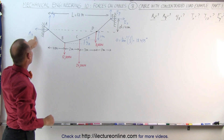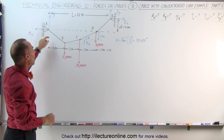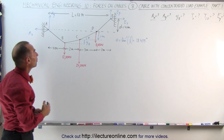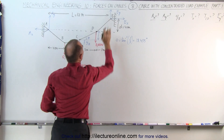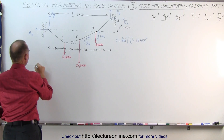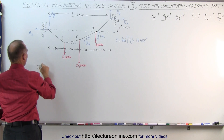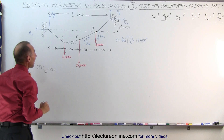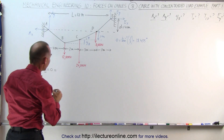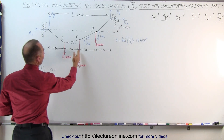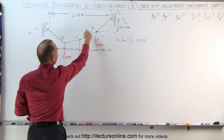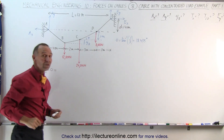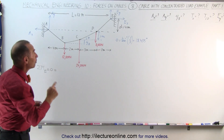To find A sub X and A sub Y, we're going to use the sum of the moments about some point. Let's start with point E. The sum of the moments about point E is equal to zero. We have these three forces, and they will cause a counterclockwise moment about point E — that means positive moments.